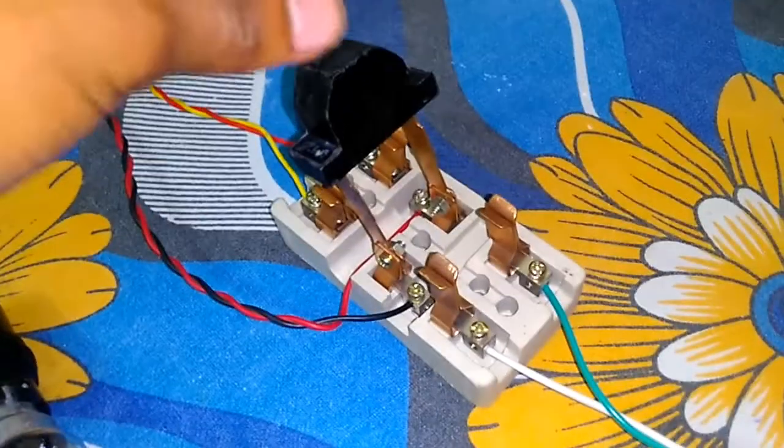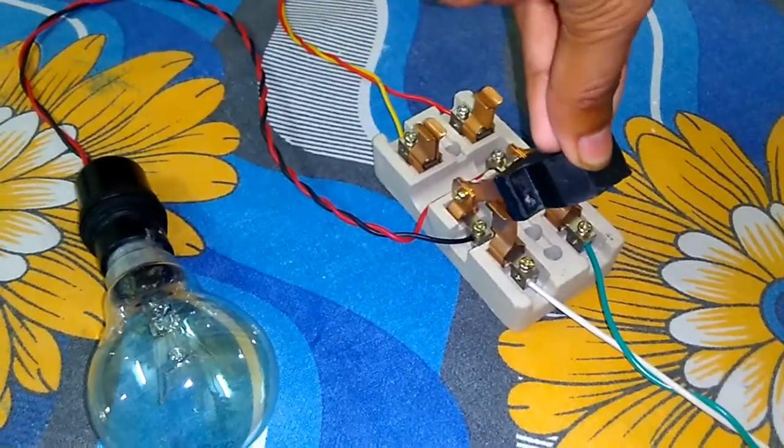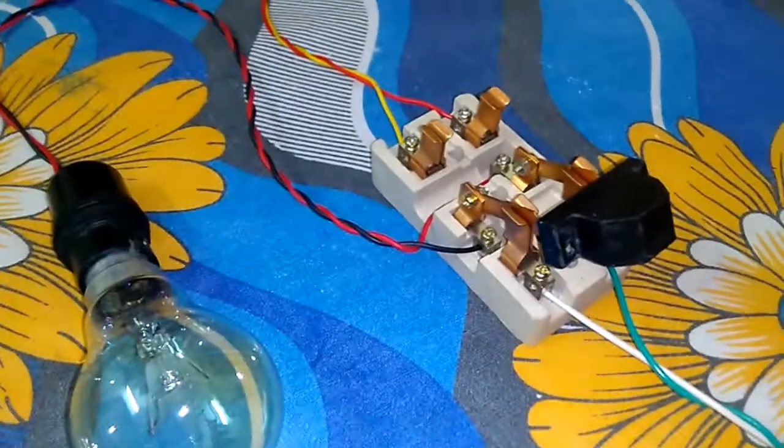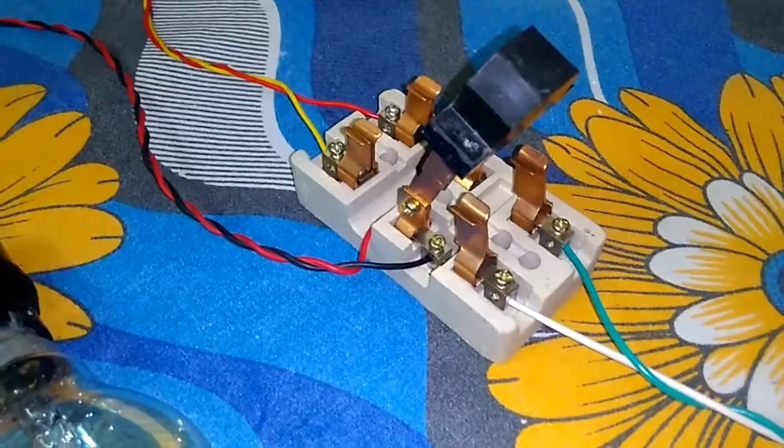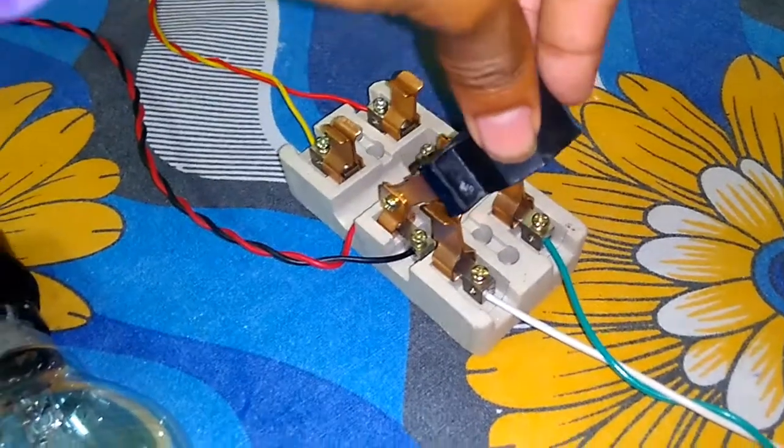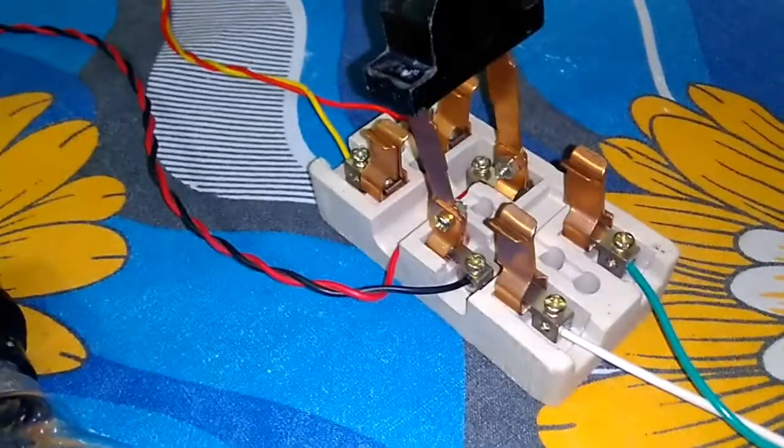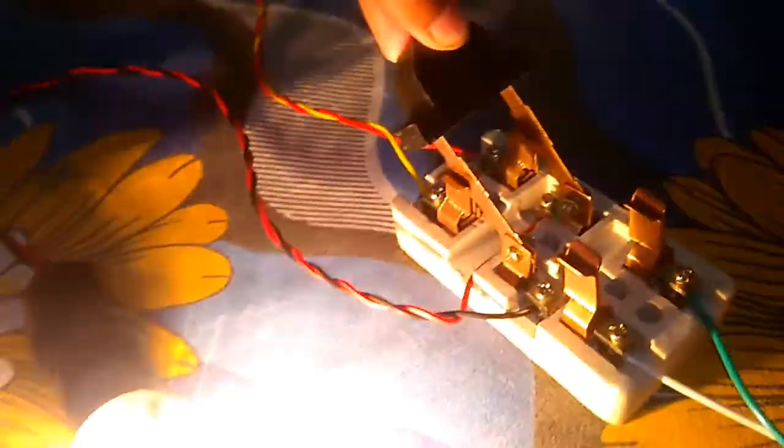When the two ports, negative and positive, connect with the lower main spot, the circuit is complete and the bulb starts glowing. Okay, let's see when the lower port disconnects from the main pole and connects with the upper generator supplier. Then the circuit is again complete and again the bulb starts glowing, as you can see.